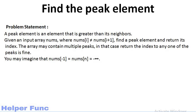A peak element is an element that is greater than its neighbors. Given an input array nums, where nums[i] is not equal to nums[i+1], find a peak element and return its index. If there are multiple peak elements, you can return any of their indices. It is given that nums[-1] and nums[n] can be considered as minus infinity, which means for the first element we only consider its next neighbor, and for the last element we only consider its previous neighbor.